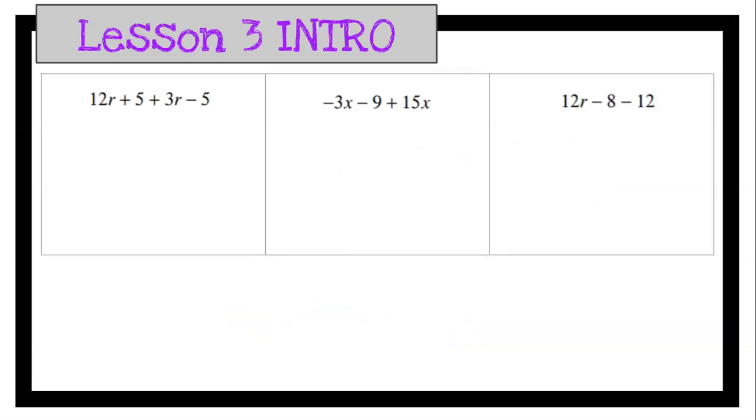So let's practice combining like terms. In our first example, we have 12R plus 5 plus 3R minus 5. So I've got my R terms. We have 12R plus 3R.